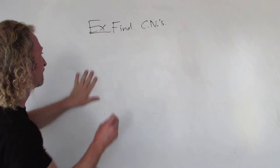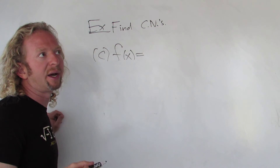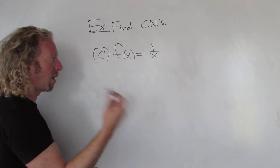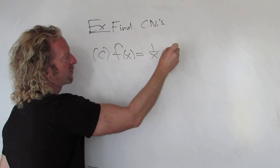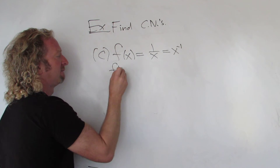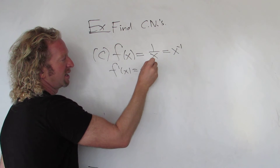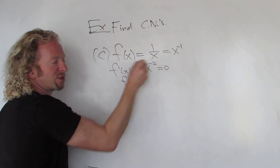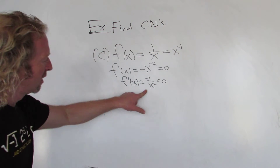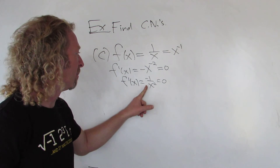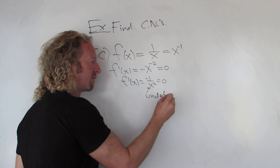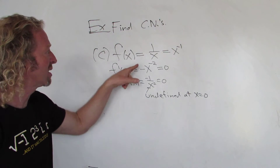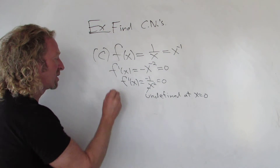Now let's look at f(x) = 1/x. The domain is all numbers except zero, so zero could never be a critical number. Taking the derivative: rewrite as x to the negative one, differentiate to get negative x to the negative two. This is never equal to zero, and it is undefined at x = 0. However, zero is not in the domain of the original function, so zero is not a critical number. Therefore, there are no critical numbers.